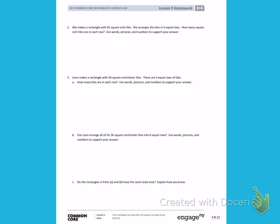Allie makes a rectangle with 45 square inch tiles. She arranges the tiles in 5 equal rows. How many square inch tiles are in each row? Use words, pictures, and numbers to support your answer.